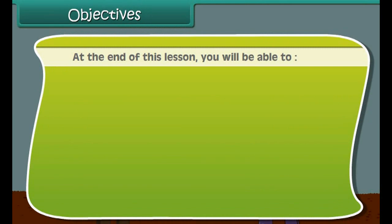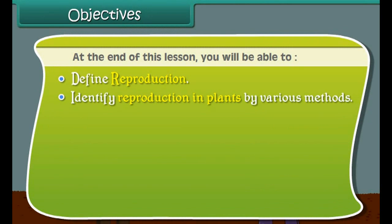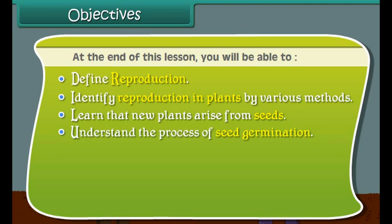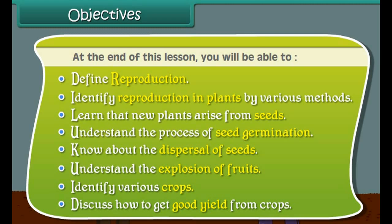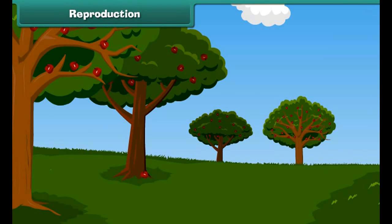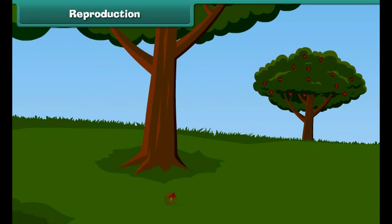At the end of this lesson, you will be able to: define reproduction; identify reproduction in plants by various methods; learn that new plants arise from seeds; understand the process of seed germination; know about the dispersal of seeds; understand the explosion of fruits; identify various crops; and discuss how to get good yield from crops. The process by which an organism produces new organisms of its own kind is known as reproduction.